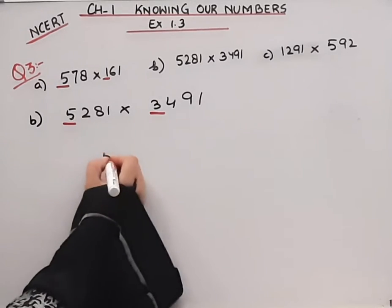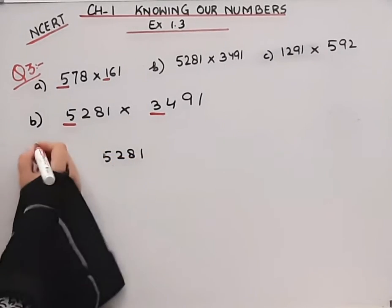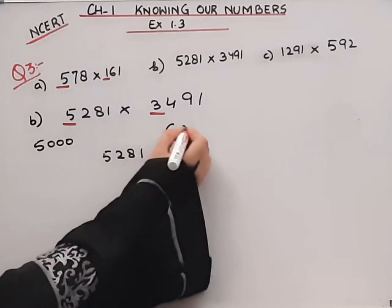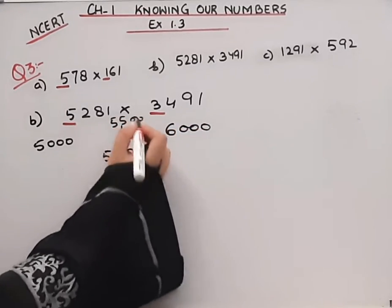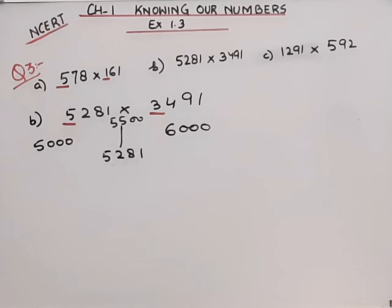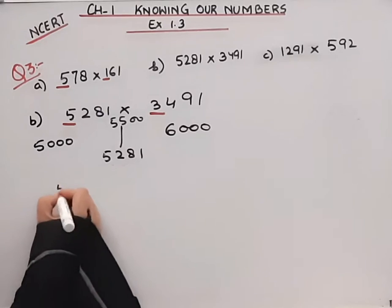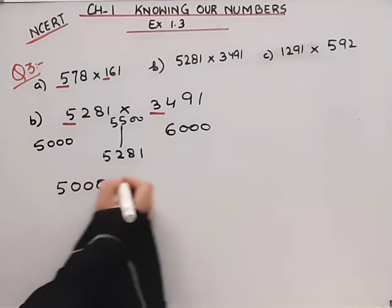This is the whole number. This number will become 5000 rounded off. This number will become 6000. Now you can see the number is 5500. The middle point is the number. This number is 5000. I will write 5000 into 6000.